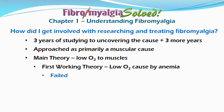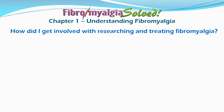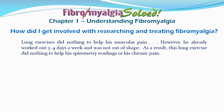At this time, I had a respiratory therapist as a patient and would run my ideas past her. She tested my patient with a spirometer — a lung capacity test — and stated that he had the lung capacity of a seven-year-old. The spirometry reading suggested something was wrong with his breathing. I had my patient do lung exercises, which did nothing to help his muscular pain.